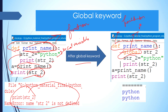Now, with the global keyword, 'str_to_python' is made global, meaning the variable is accessible outside the function as well. After calling the print_name function, we printed 'str_to_python' outside the function.